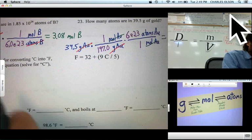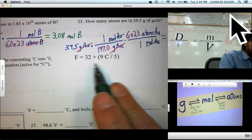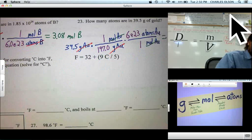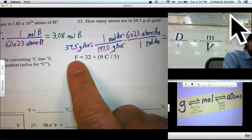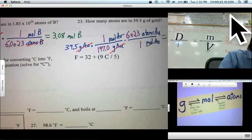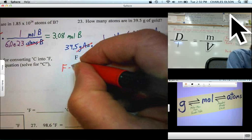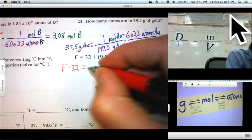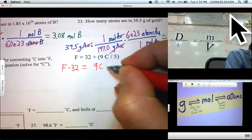I can't resist the equation, converting this equation from F to C, so let's do that really quickly. What do I do first? Well, I'll divide 32 from both sides. So F minus 32, actually subtract, equals 9C over 5.